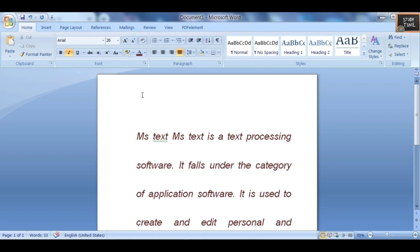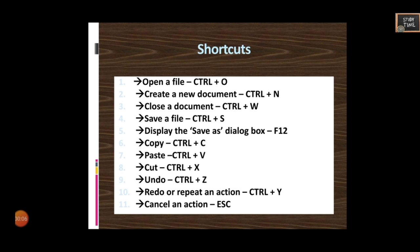Now we'll see the shortcuts you need to know. Ctrl+O to open a file, Ctrl+N to create a new document, Ctrl+W to close a document, Ctrl+S to save a file, F12 to display the Save As dialog box. Ctrl+C for copy, Ctrl+V for paste, Ctrl+X for cut, Ctrl+Z to undo, Ctrl+Y to redo or repeat an action, and Escape to cancel an action.